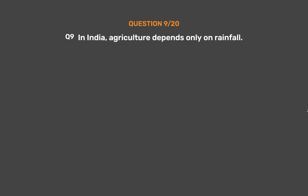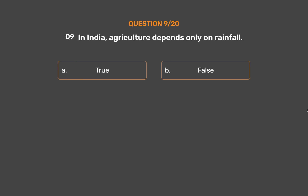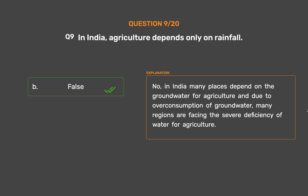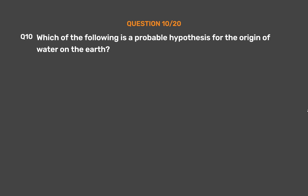Question number 9. In India, agriculture depends only on rainfall. Option A: True. Option B: False. The correct answer is Option B: False. In India, many places depend on groundwater for agriculture, and due to overconsumption of groundwater, many regions are facing severe deficiency of water for agriculture.